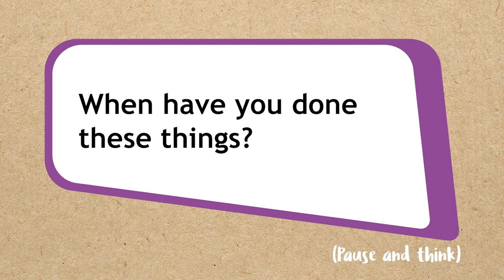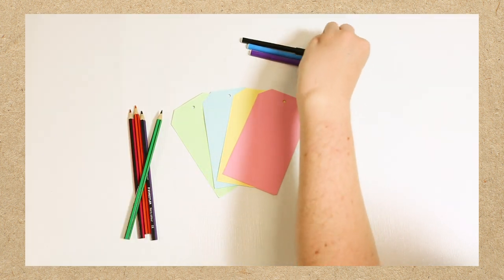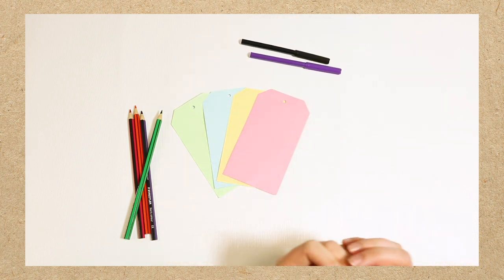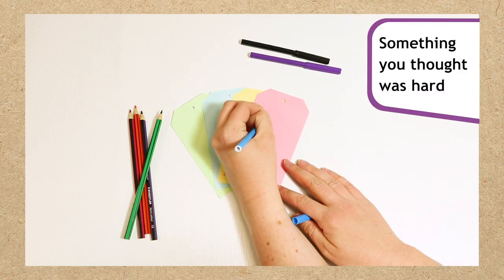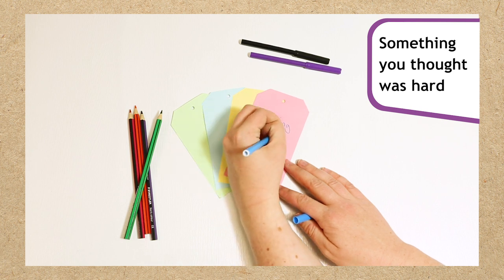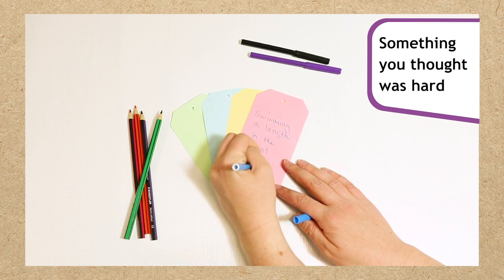We're going to use these memories to build your own confident superhero tool belt. To get started, take four of the gift tags and on each one draw or jot down something you thought was really hard to do but you did it. For example, swimming a length in the pool.